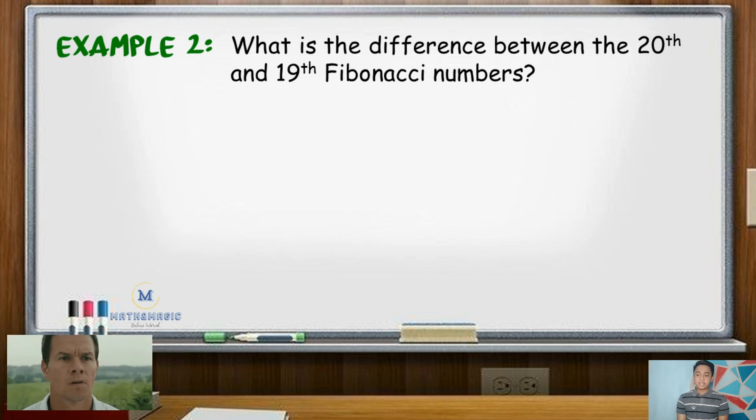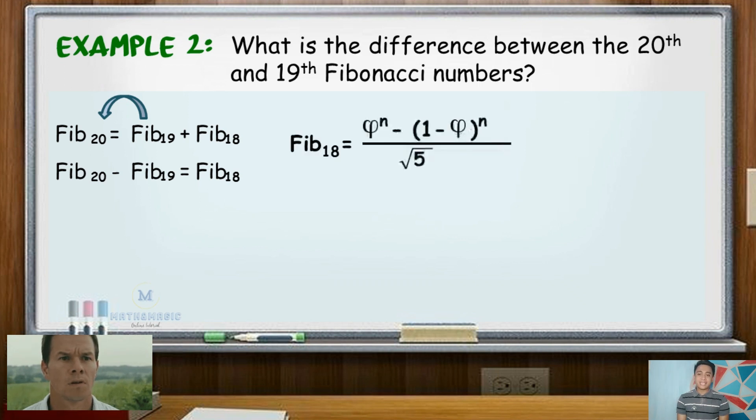Remember that the formula when getting the 20th Fibonacci number is 19th Fibonacci number plus 18th Fibonacci number. By simple algebraic manipulation, transpose Fib_19 to the left side. Thus, the difference between Fib_20 and Fib_19 is Fib_18.